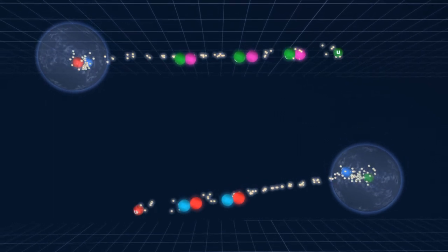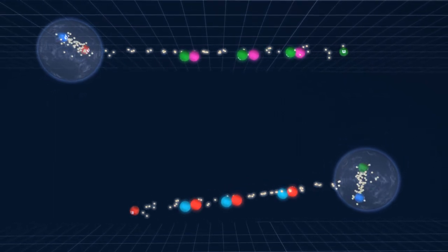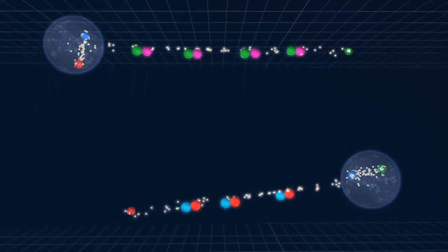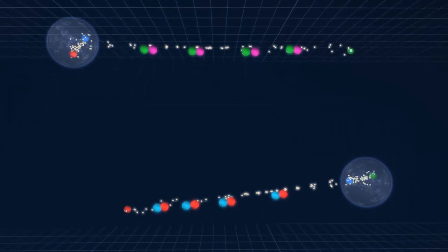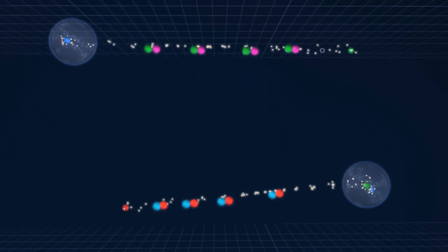Instead of stretching the gluon field between the quarks further, the gluon field breaks by creating a new pair of quarks, a quark and an anti-quark.